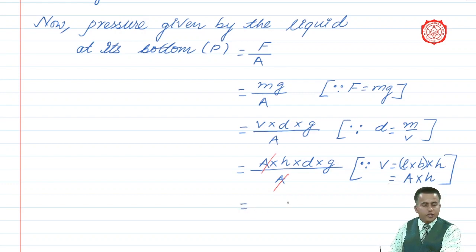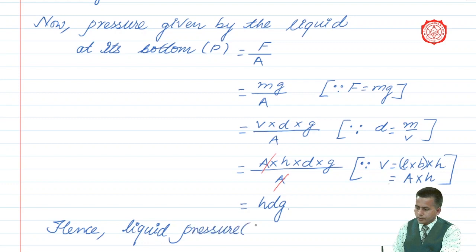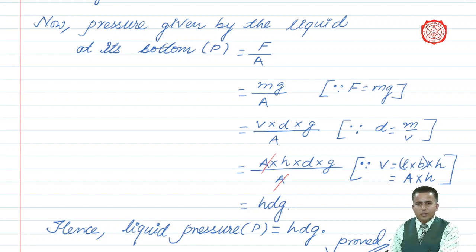That gives a relationship hdg finally. And as a conclusion you can write, hence liquid pressure P is equal to hdg. Hence it is proved. This is how you can prove the relationship P equals hdg. Thank you.